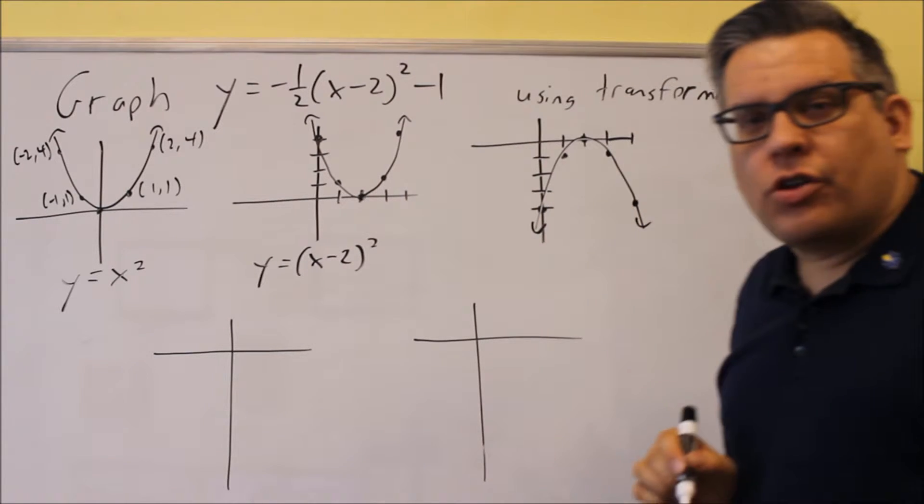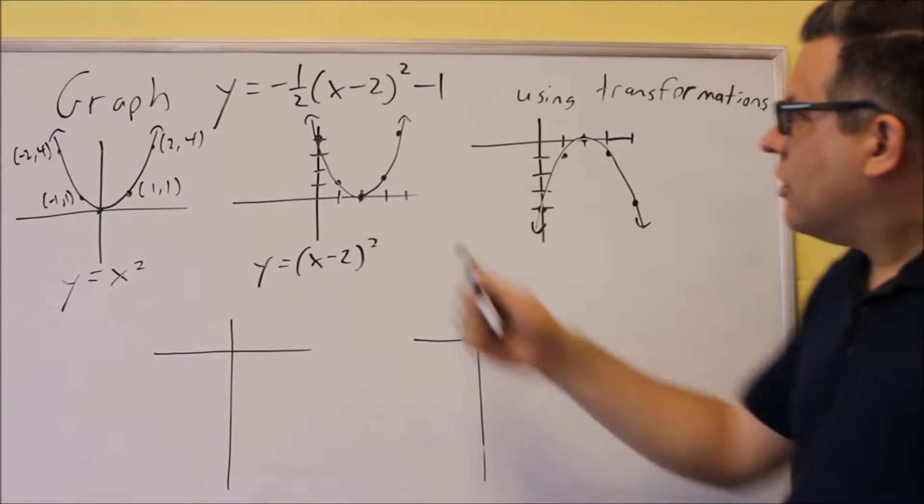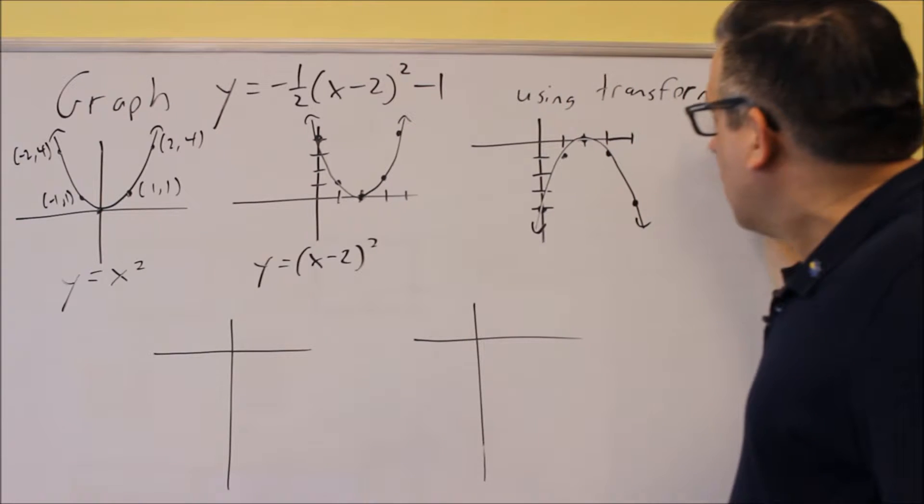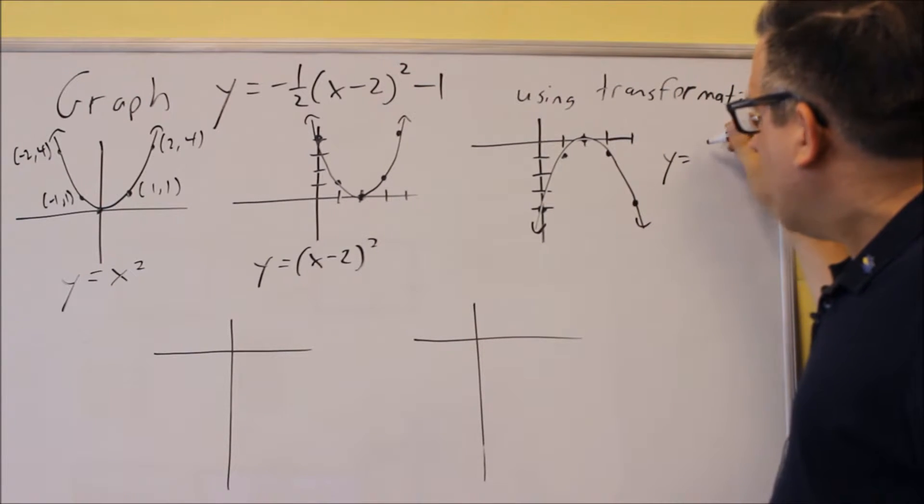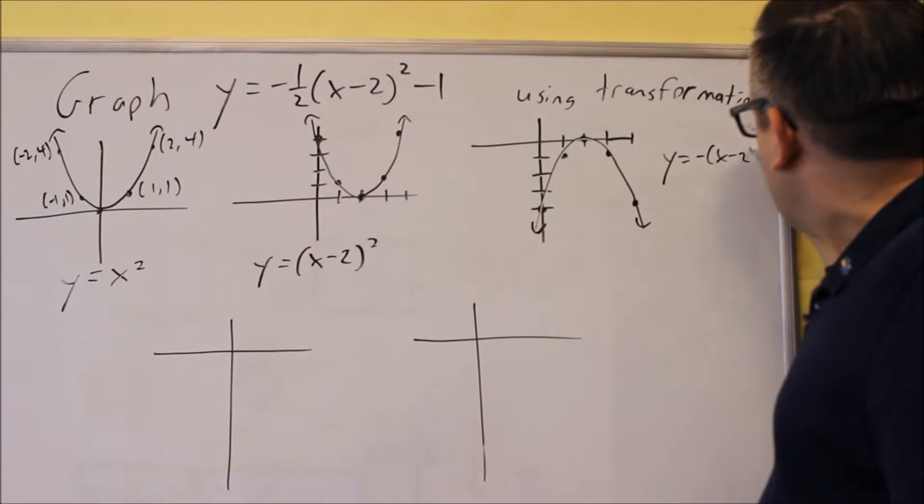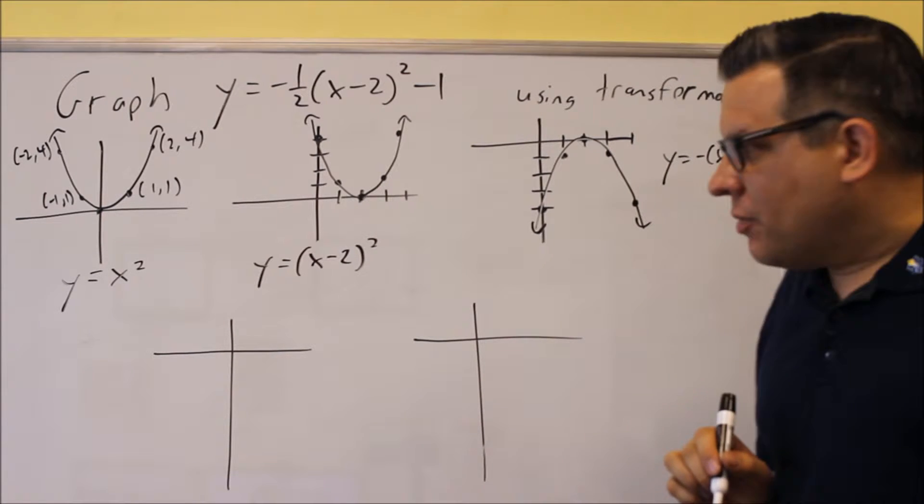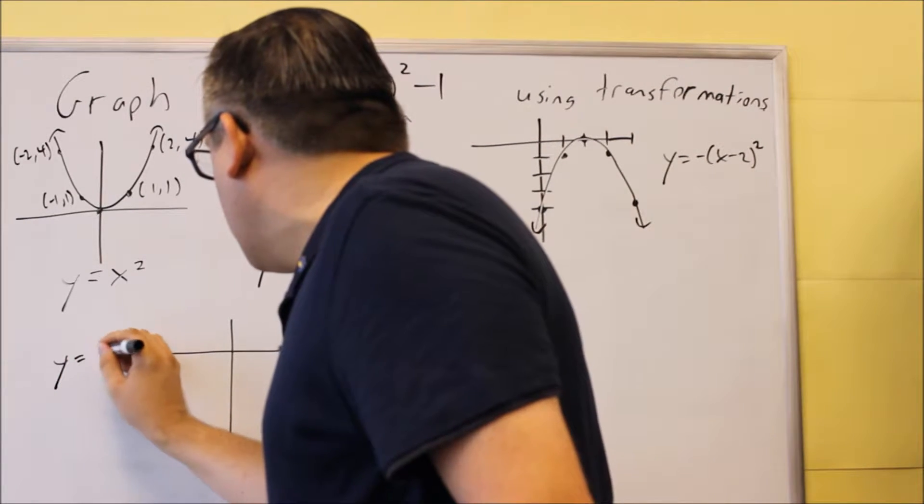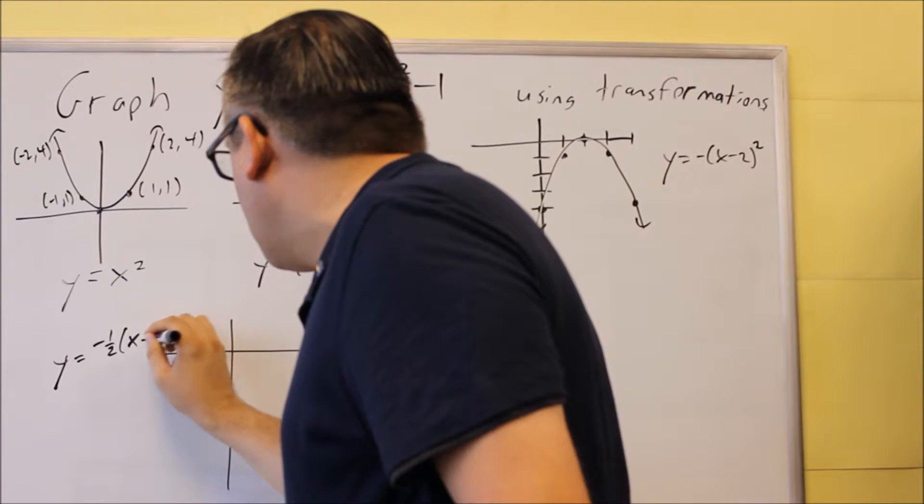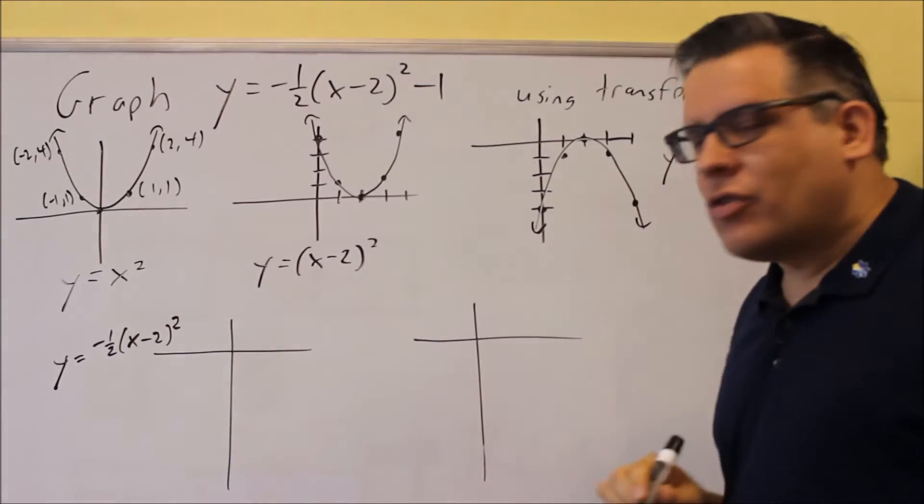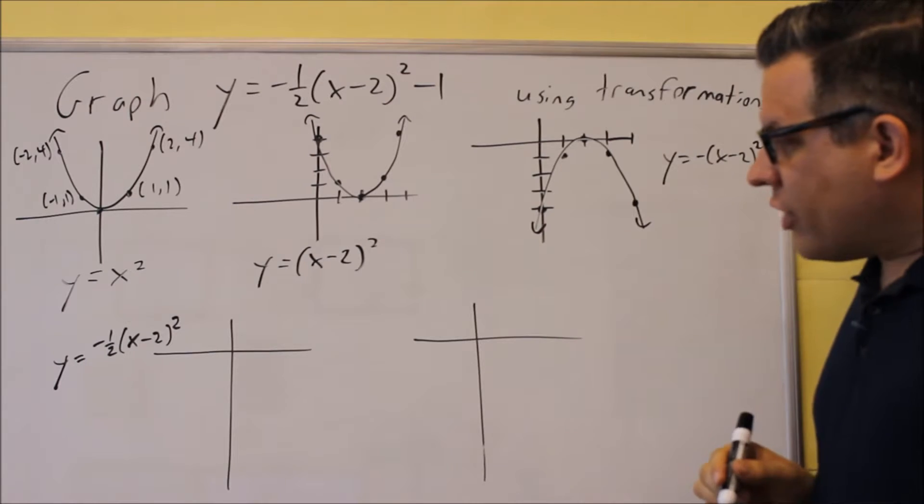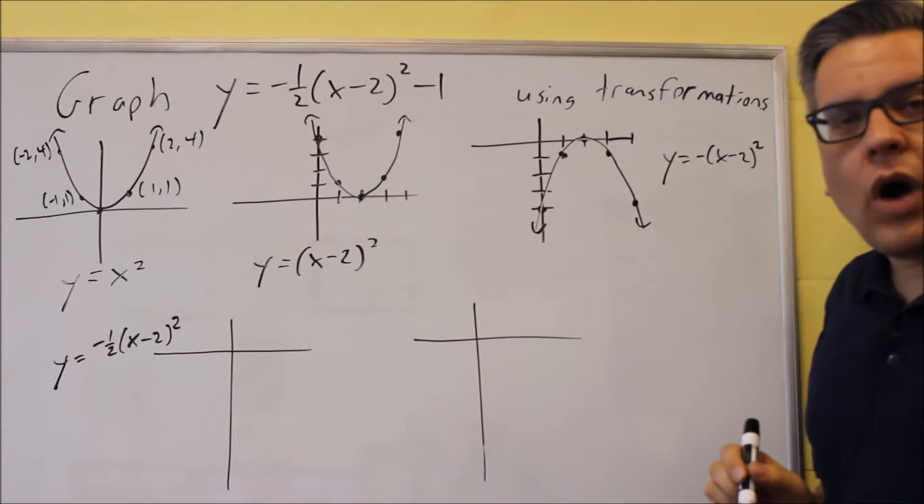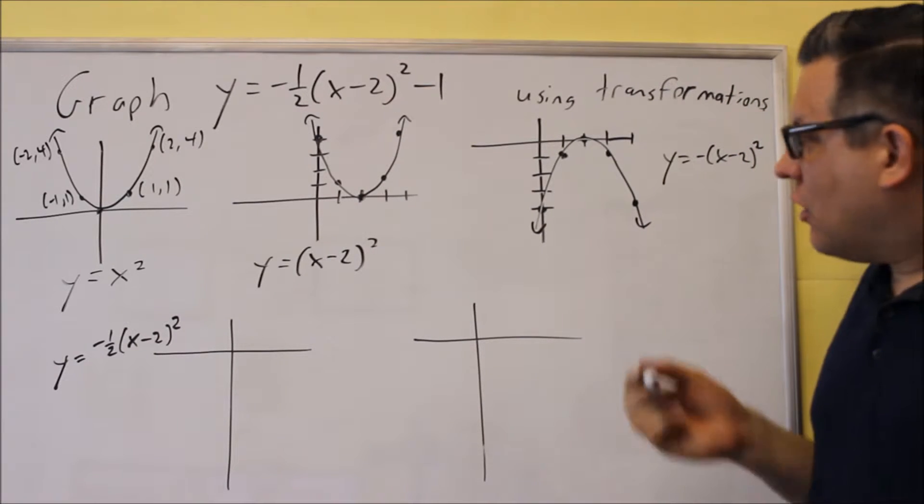Now, before we shift it down one unit, let's first deal with the 1 half on the outside. So now this graph here, let's label it. The one that we did here was negative (x minus 2) squared, just so you know which one we're doing. This next one, the graph that we're going to do here, is we're going to do negative 1 half (x minus 2) squared. That's the one that we're going to graph here. What that does, negative 1 half, it's going to take this graph, and it's going to take all of the y values and cut them in half.